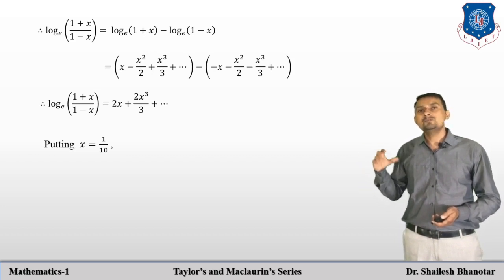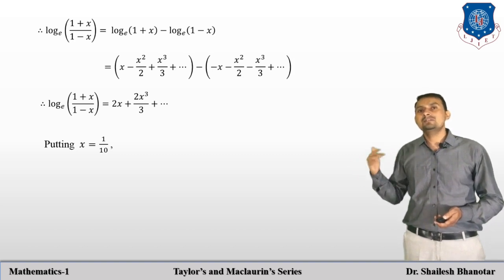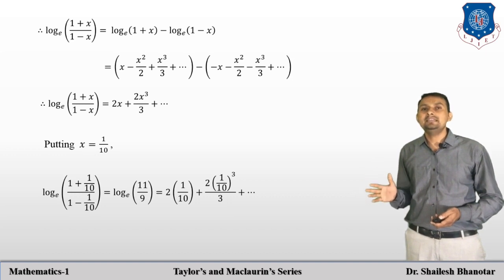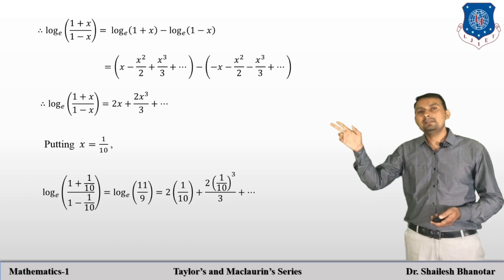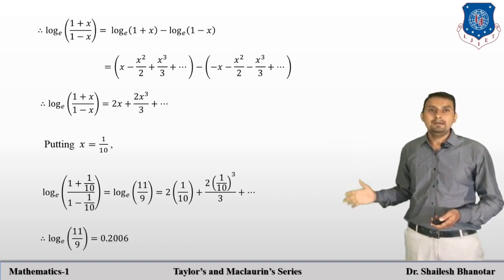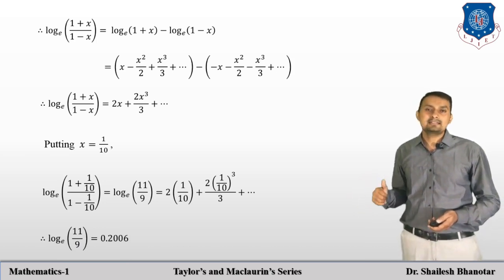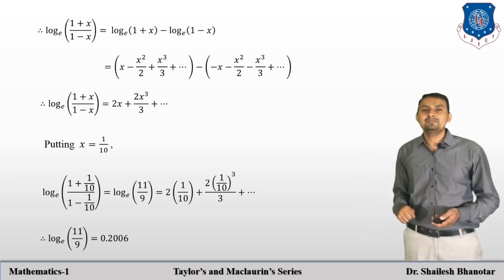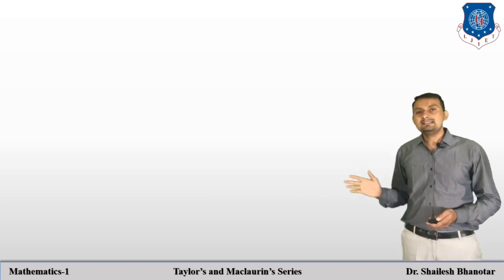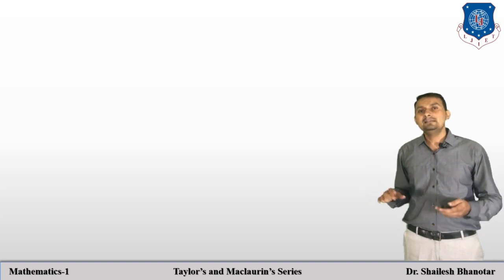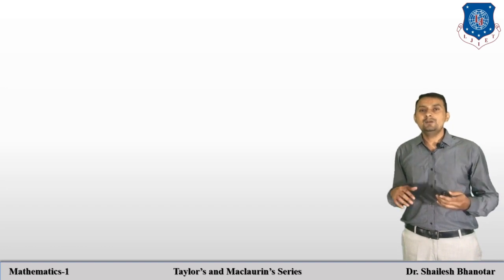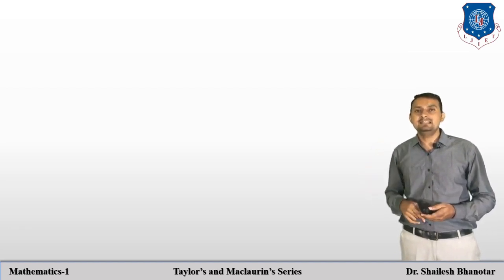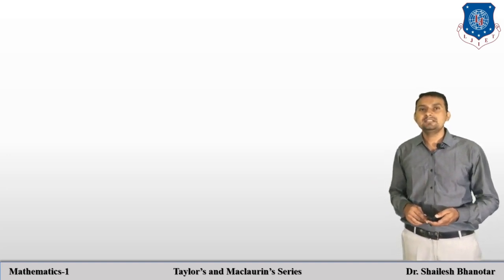Our question asks us to estimate log(11/9) to base e. We set x = 1/10, so that (1 + 1/10)/(1 − 1/10) = (11/10)/(9/10) = 11/9. Substituting x = 1/10 into the Maclaurin series expression, we get approximately 0.2006. This demonstrates that when you cannot compute a function value directly, the Maclaurin series lets you estimate it at any particular point. In the next video we will discuss the Maclaurin series using differentiation and integration concepts.